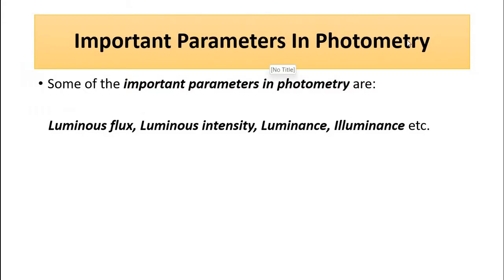The important parameters in photometry which we are going to discuss are: luminous flux or luminous power, luminous intensity, luminance, and illuminance. In this video, we will be discussing only about luminous flux, luminous intensity, and also about luminous efficiency.